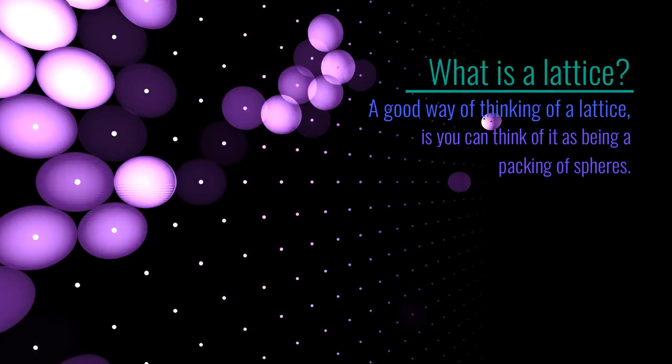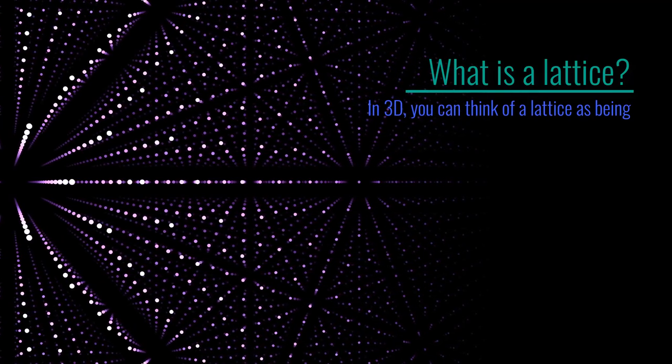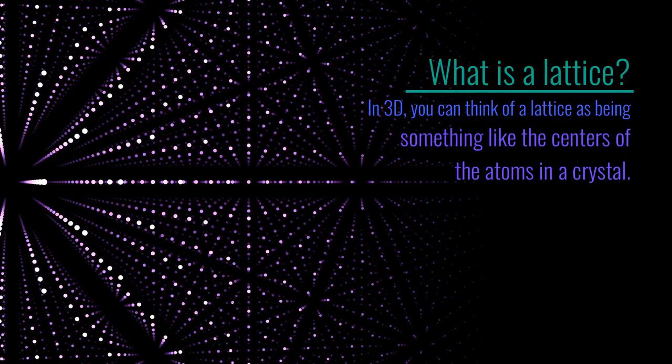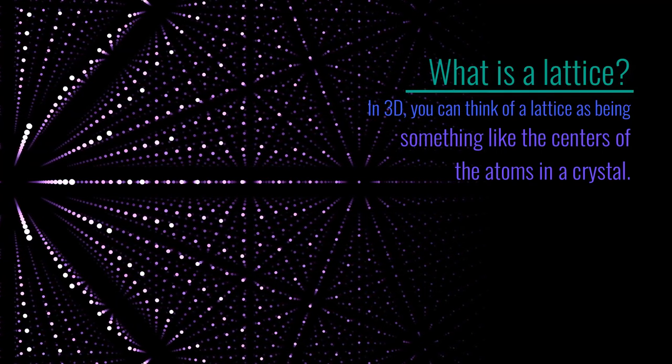So these are packings in two dimensions. In three dimensions you could think of a lattice as being something like the centres of the atoms in a crystal, and the spheres might be the solid atoms touching each other.